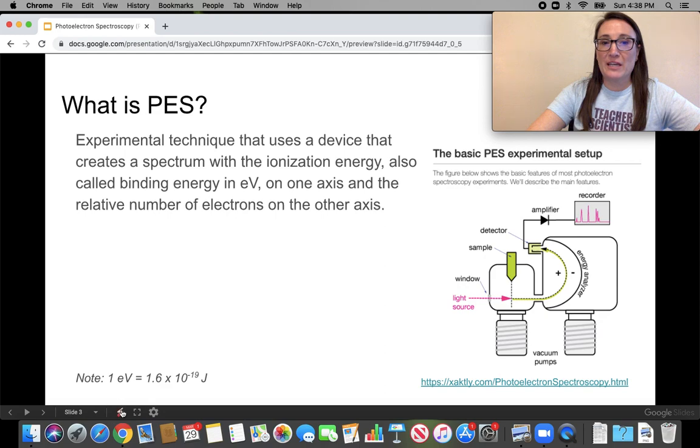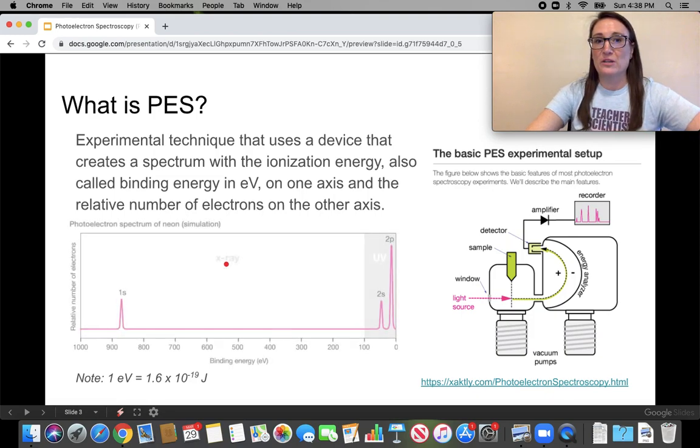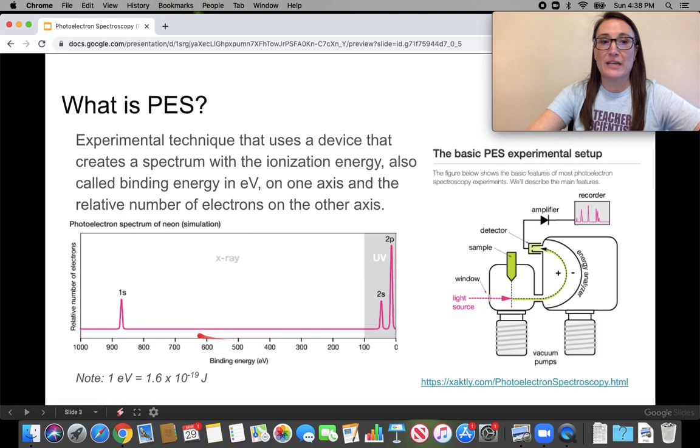Really quickly, in AP Chem, you really don't have to know how the device works, but I did find a great link you can use. The big thing you need to know is that ionization energy will be plotted on one axis, also called binding energy, in electron volts, and on the other axis will be the relative number of electrons. I got this from that same site.